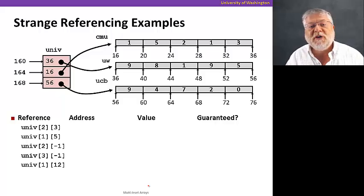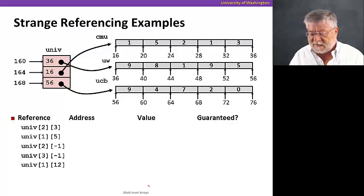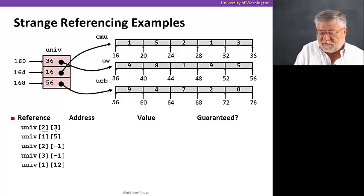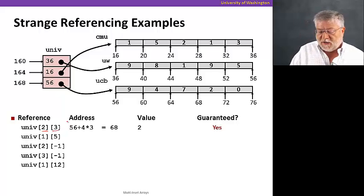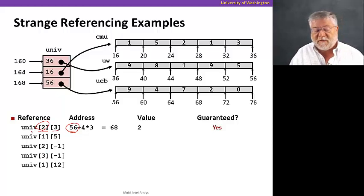Let's complete this video the same way we did the previous one with some examples of accesses. So let's go to univ[2][3]. The address computation here, you'll notice, is first to get the starting address of the third element of the univ array. That would be the 56. That address is the UCB zip code.